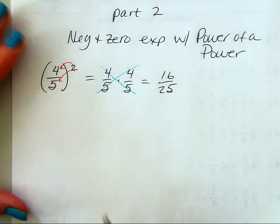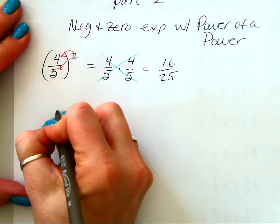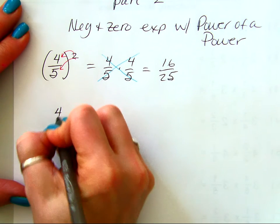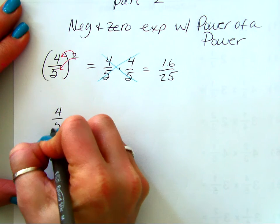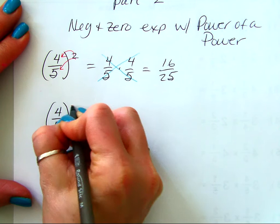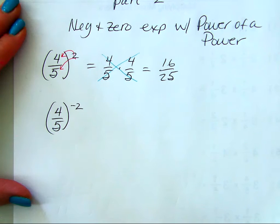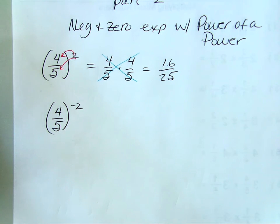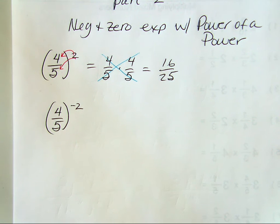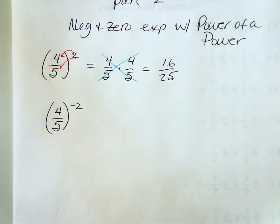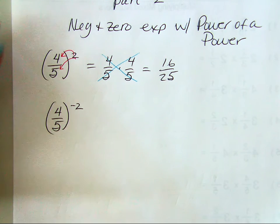But I want to talk about what we would do if I took 4 fifths to the negative 2 power. I'm going to show you the long way, and then there's going to be a shortcut. And you're going to see it and say, can't we just do this?